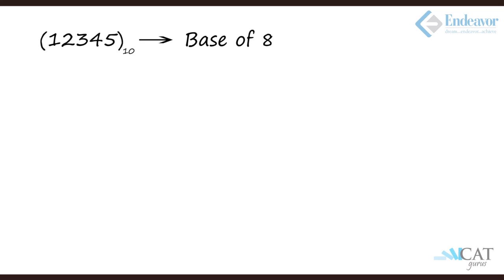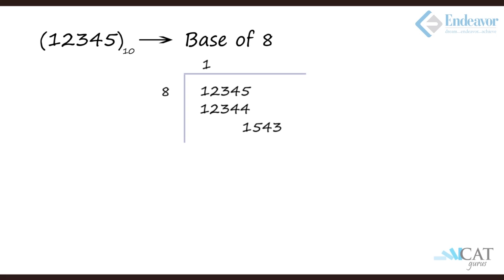Now let's convert the decimal number 12345 into base 8 using the division method. We set up a division table with 8 as the divisor and 12345 as the dividend. The largest multiple of 8 not exceeding 12345 is 12344, giving quotient 1543 and remainder 1. We record the remainder and bring down quotient 1543 as the new dividend.